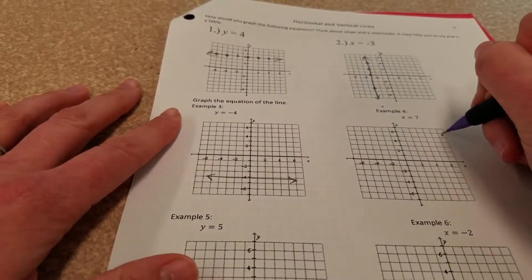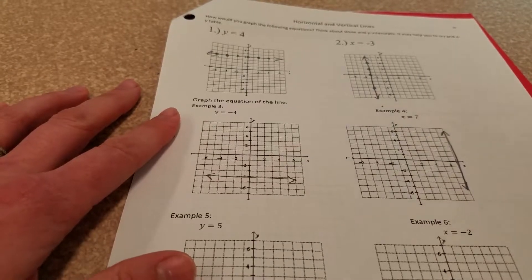If I have x equals, I'm getting a vertical line through that number on the x-axis.